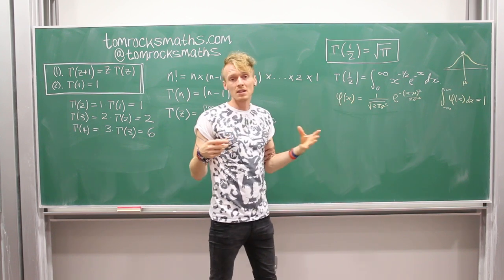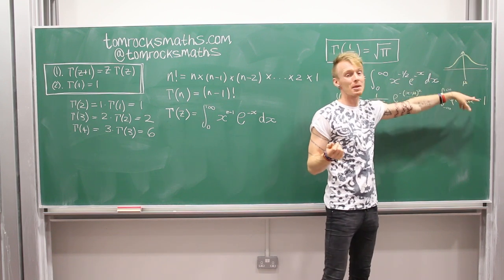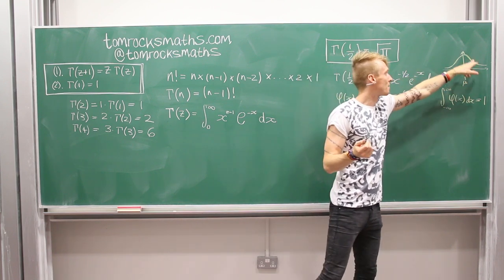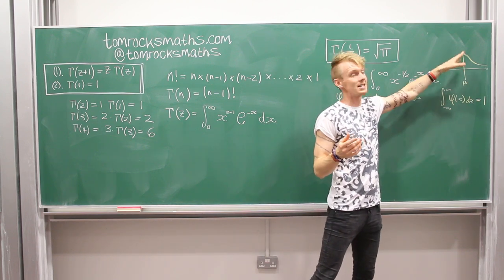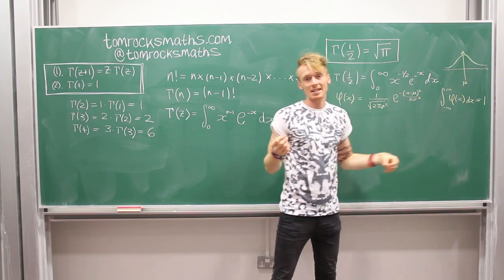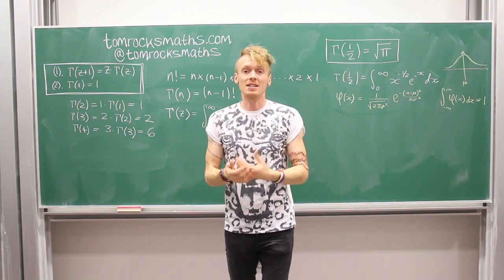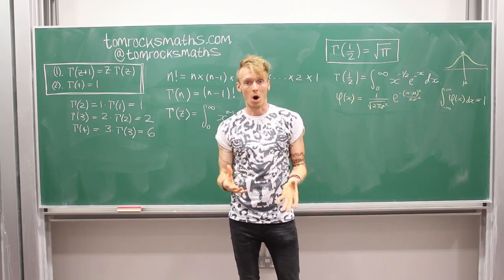And the property that we want to use, well, there are two. We want to use the fact that it's symmetrical about the mean, so it forms this lovely bell-shaped curve, which means that the area on the left-hand side is equal to the area on the right-hand side. And also the fact that because it's a probability density function, if you integrate it over all of space, the total must be one.